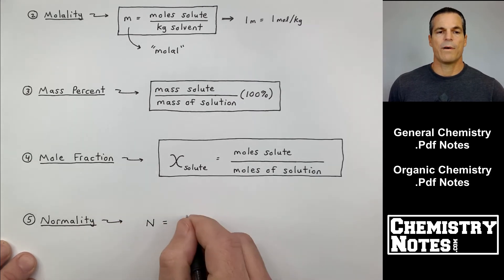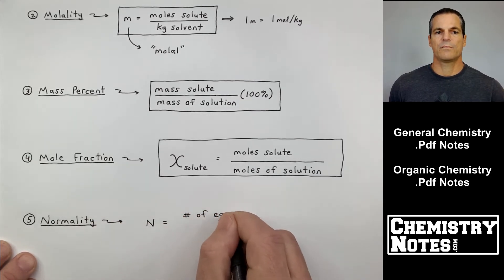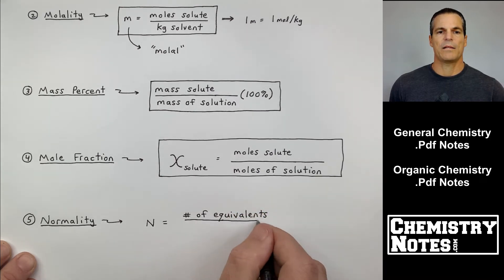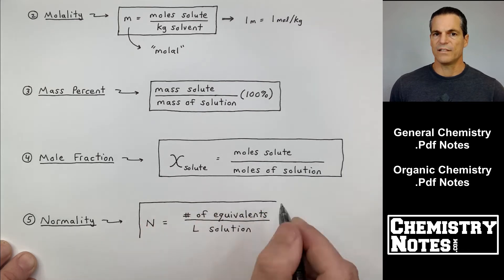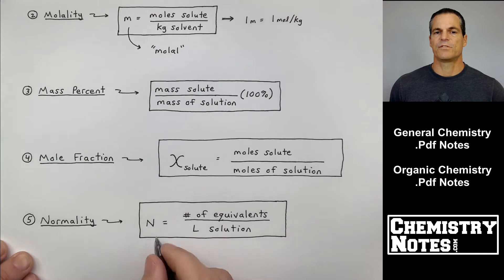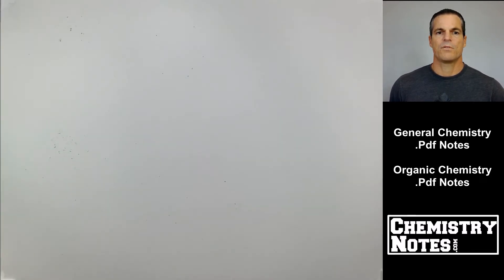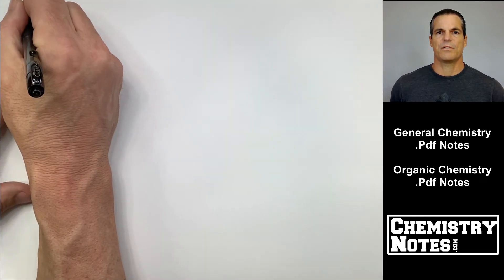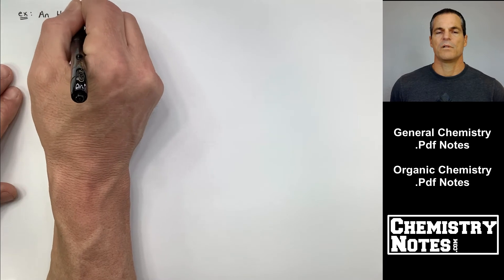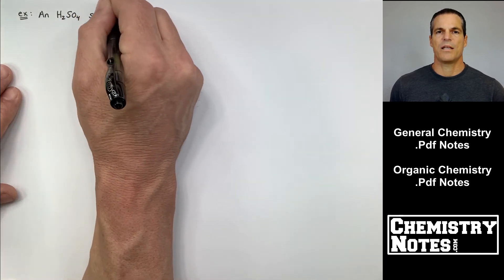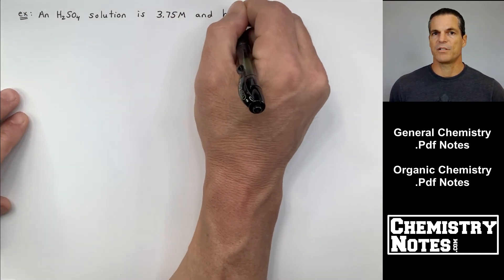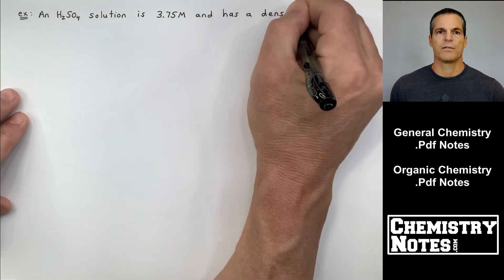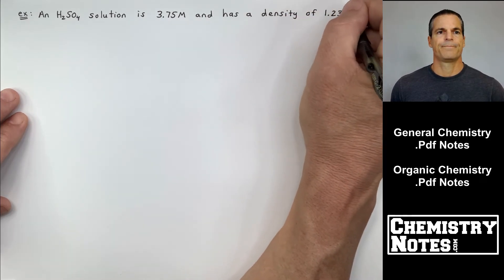Number five, normality. We use it sometimes with acids and bases. Normality is big N, and normality equals the number of equivalents divided by the liters of solution. So those are the five different types of solution composition. The most popular are molarity, mass percent, and mole fraction. But at the end of this chapter, we'll use molality when we talk about freezing point depression and boiling point elevation. Definitely want to know them.